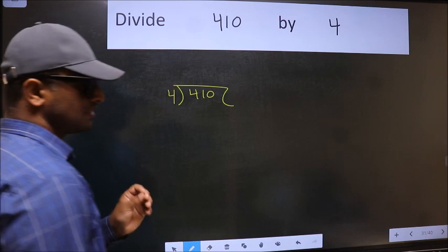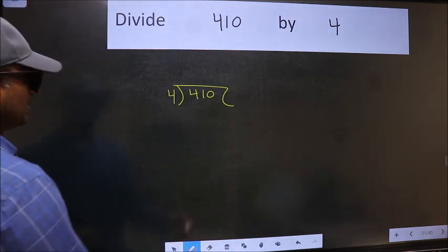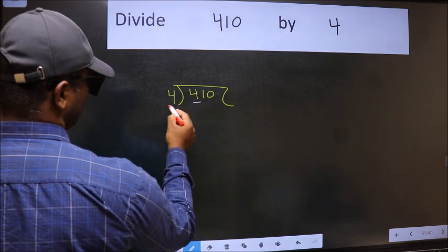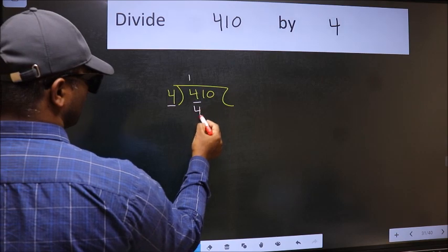This is your step 1. Next, here we have 4, here also 4. When do we get 4 in 4 table? 4 ones 4.